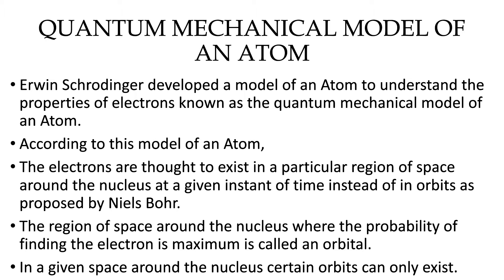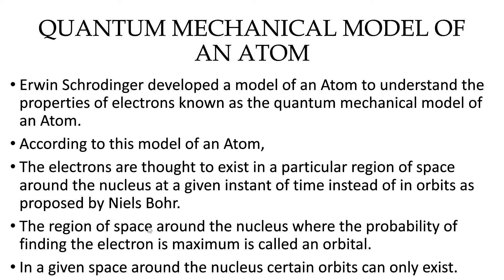Under these circumstances, Erwin Schrödinger developed a quantum mechanical model of an atom. According to this model, electrons are thought to exist in a particular region or space around the nucleus at a given instant of time, instead of in orbits as proposed by Niels Bohr.